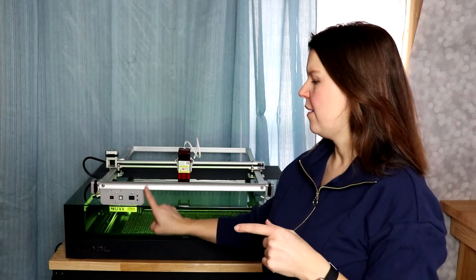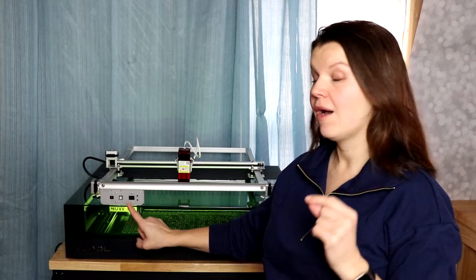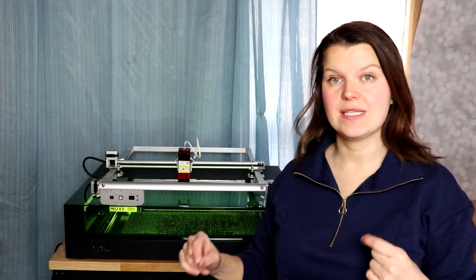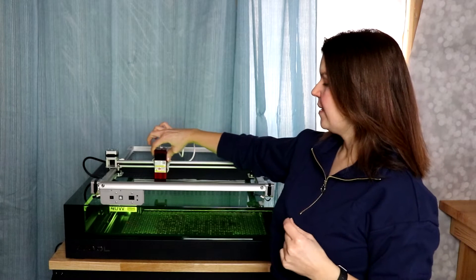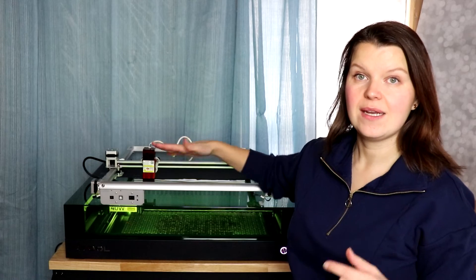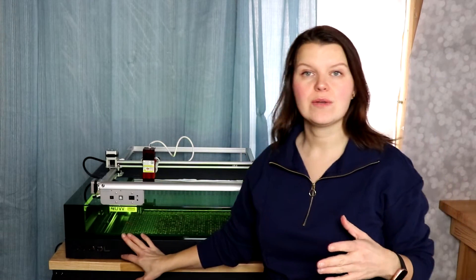One other difference between the open and enclosed models is autofocus. On open models you have to focus this manually. So with this laser head here I would need to put the material underneath, adjust the height of the laser head to focus it. With most enclosed models autofocus is going to happen for you.